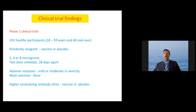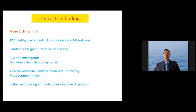Clinical trials include the Phase I trial with 192 healthy participants in two age groups: over 60, and between 18 and 59. They were randomly assigned to vaccine or placebo. Three different doses — 2, 4, and 8 micrograms — were given as a two-dose schedule, 28 days apart. Adverse reactions were mild or moderate in severity, and the most common was fever.